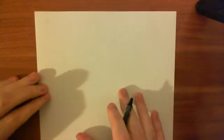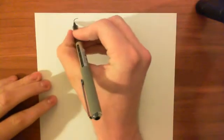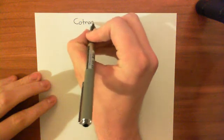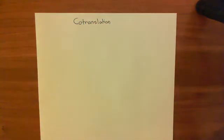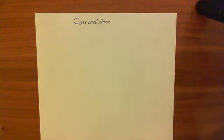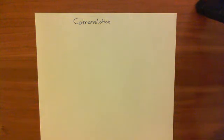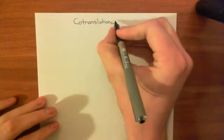Welcome to this first video in my playlist on synaptic mechanisms. In this video, we're going to look at co-translational targeting of proteins to the endoplasmic reticulum. The reason this is in a synaptic mechanisms playlist is because synapses are all about proteins in the membrane of cells that have been targeted into vesicles. It's all about proteins in membranes that are fusing together and vesicles as well. To have a good understanding of synaptic mechanisms, we need to look at how proteins get into vesicles, and this starts with co-translational targeting to the endoplasmic reticulum.